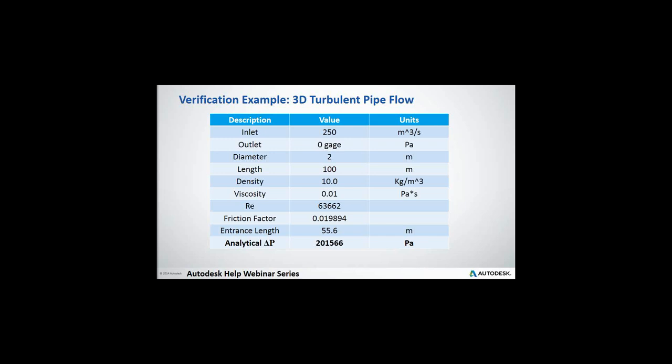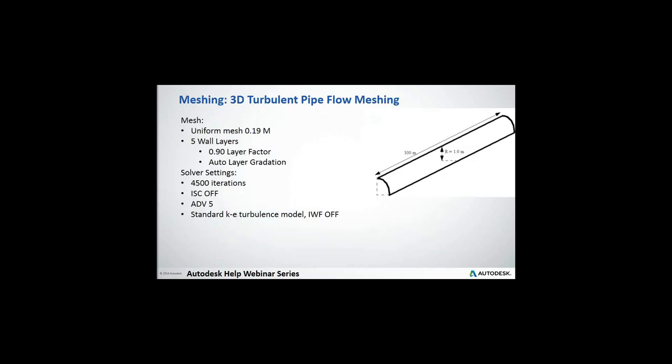We calculate entrance length there, and then we gave ourselves some more room. So the pressure drop we're worried about is the last 40 meters. So we actually have about 4.6 extra meters in there. So if you do an analytical Delta P on the last 40 meters, you're going to get 201,566 pascals. So, all right. So there's kind of the picture.